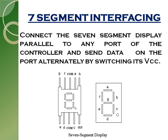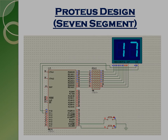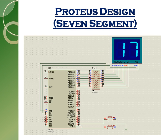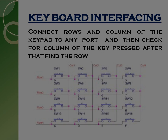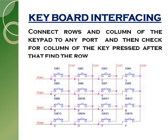Then we have seven segment display interfacing. The seven segment display has eight data pins from A to F, plus a dot pin from which we can implement a dot. It actually has eight LEDs corresponding to segments A, B, C, D, E, F, and G. This is a Proteus simulation of the seven segment display.